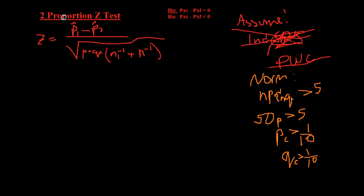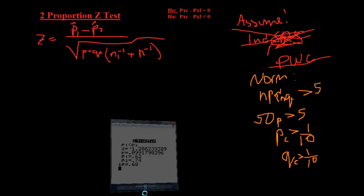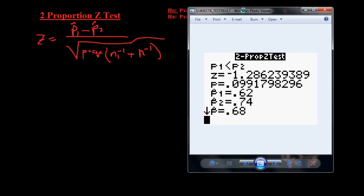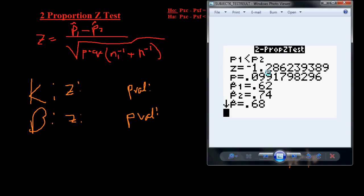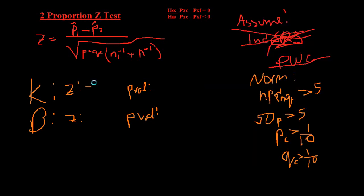As you can see, this is for subject k. So for subject k, he got a z-score of negative 1.286 and a p-value of 0.099. So let me write that down. Okay. So z-score of negative 1.29, a p-value of 0.099.